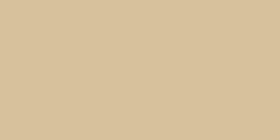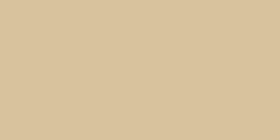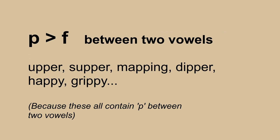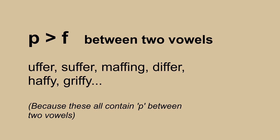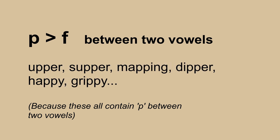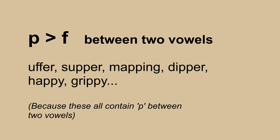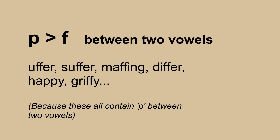A perhaps more interesting reason for sound changes being incomplete is lexical diffusion. Strictly speaking, lexical diffusion is a model of how sound changes happen in the first place. The idea is that for any given sound change, there's a set of words that meet the criteria and are therefore liable to be affected. But instead of following the Neogrammarian principle and snapping all those words into the change at once, the change affects some words before others, so at any given point in time it will have worked its way through only a certain percentage of the eligible words.